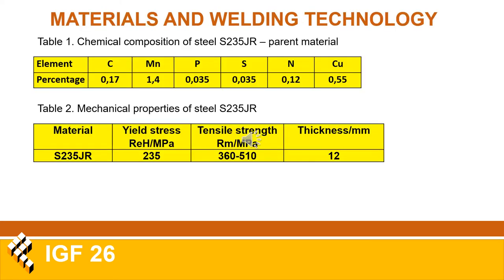Shown here are the chemical composition and mechanical properties of the parent material S235JR. These properties were used as input data for the simulations. A more detailed and accurate base of such properties will be obtained after all of the tensile tests have been performed.